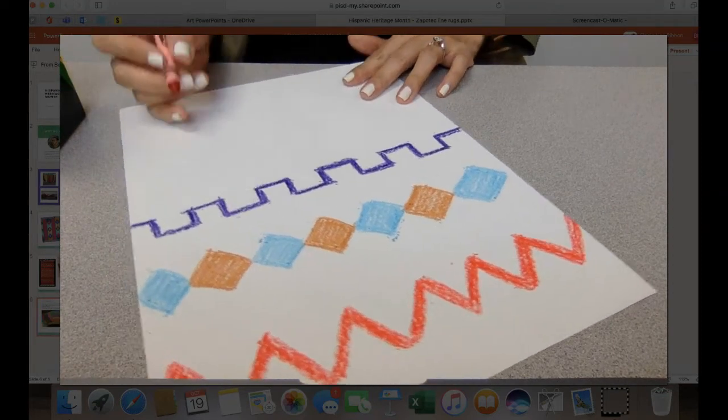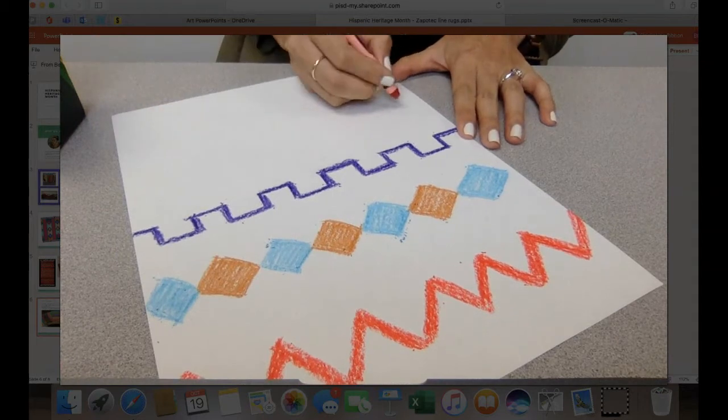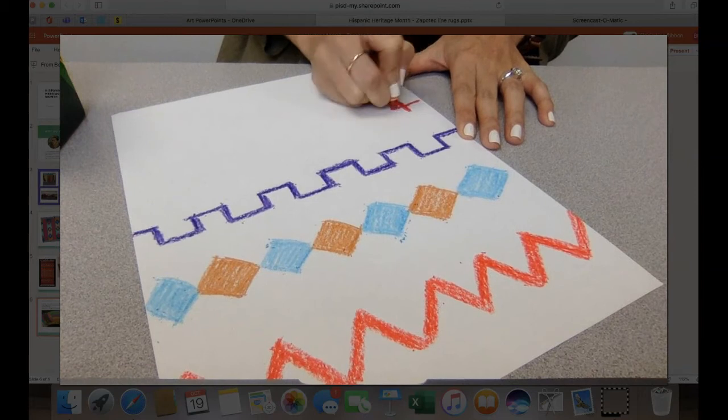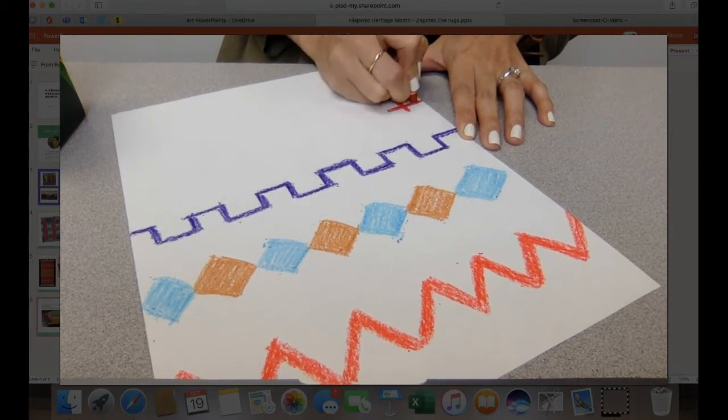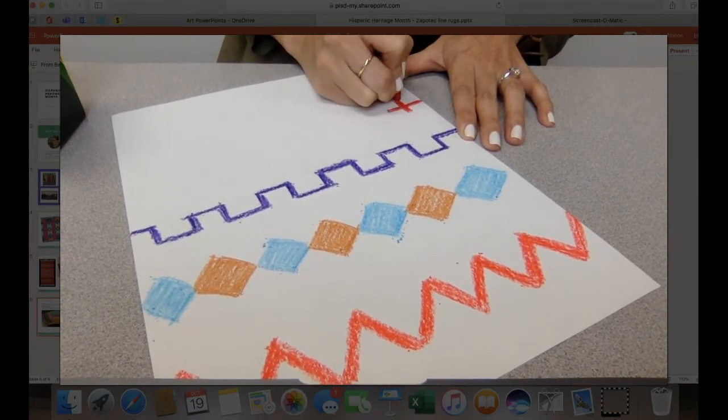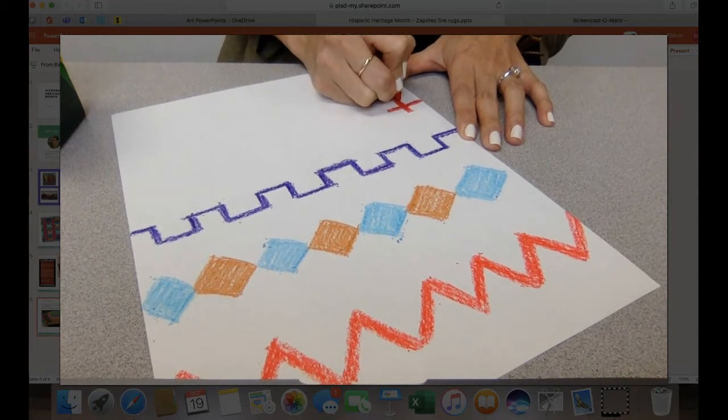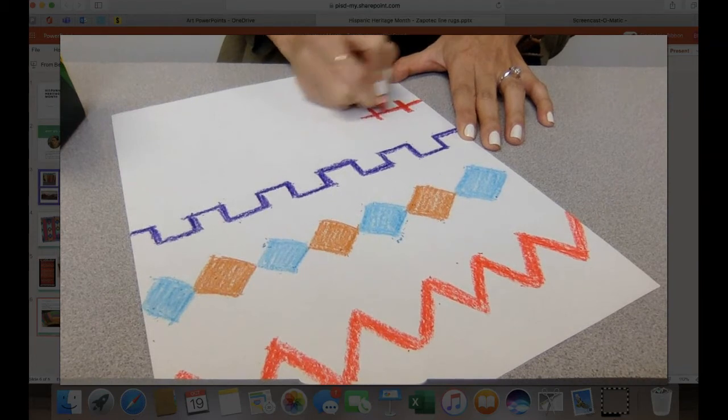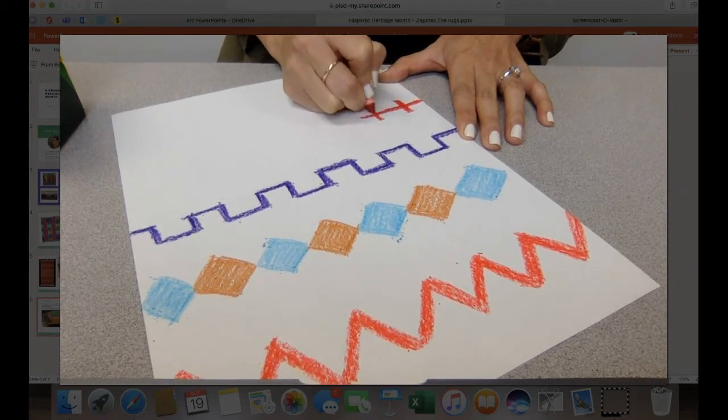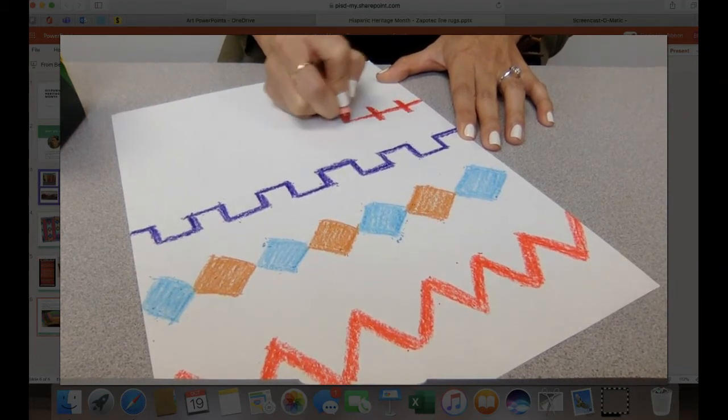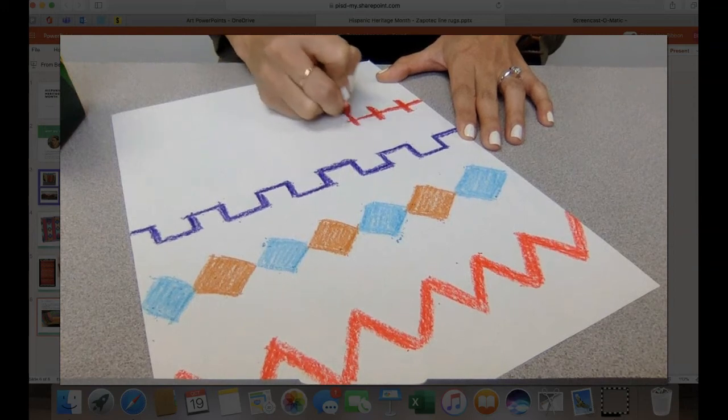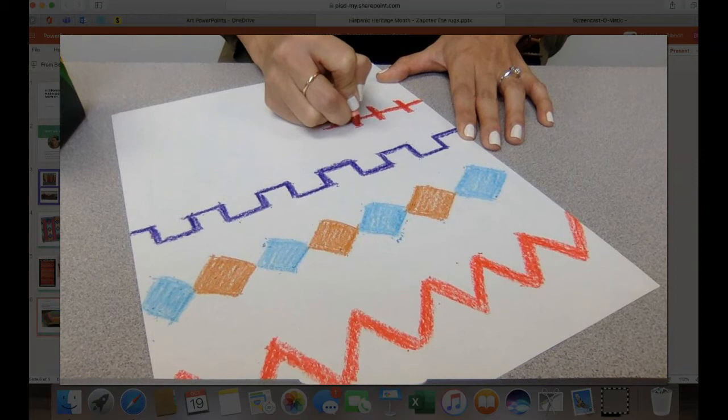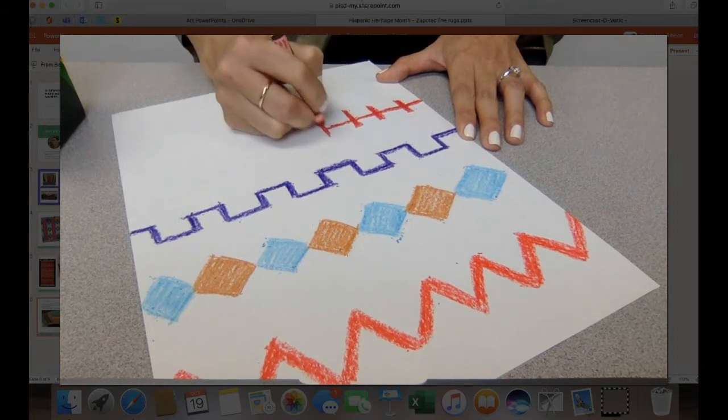And now I'm going to do a line of pluses because I saw that on some of the rugs. And your lines don't have to be like mine. They can be completely different. I might just add in a loop in there for fun. But I was trying to use the lines that were inspired by the Zapotec people.